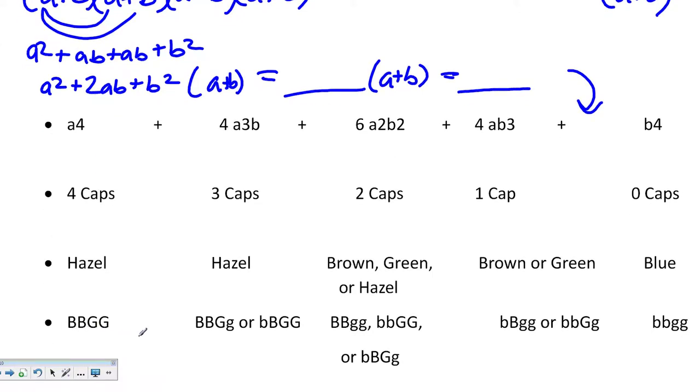If all four caps are present, then you know you're going to have a homozygous dominant genotype. If you have three caps, then you have at least one lowercase letter. Two caps, you have several different combinations, can be both capital B's, capital G's, or a mixture of the two. One capital, it's either going to be a B or a G, and then zero caps means that you have all recessive traits.